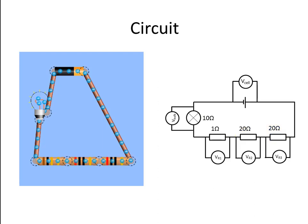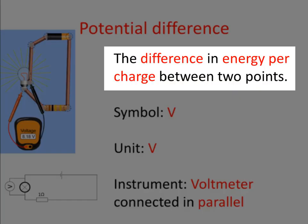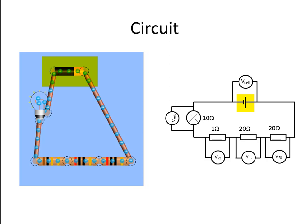We are going to place a voltmeter across each component and see what the voltage across that component is — what the potential difference is across each component. You must remember that voltage means change in energy per charge. In the case of a battery, that voltmeter tells us how much energy the battery gave each group of charge. In the case of the other components, the voltmeters tell us how much energy that component took away from each charge as it moved through it.